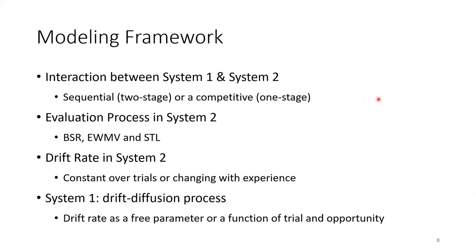The first configuration is the interaction between the two systems. A popular perspective is that the two systems are connected sequentially, meaning System 1 starts first and System 2 kicks in later, forming a two-stage process. Or it can be competitive, meaning only one of the two systems dominates each choice, giving a one-stage process. For the distance-to-target evaluation in System 2, it can be modeled by the three promising single process models mentioned earlier. The drift rate in System 2 can be either stationary over trials or changing with experience. For System 1, instead of an excursion distribution, I used a standard drift diffusion process, providing a more coherent framework. The drift rate in System 1 can be either a free parameter or a function of trial and opportunity.